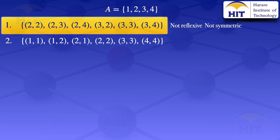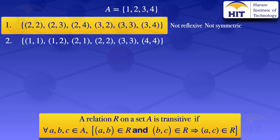I now move on to checking if the relation is transitive. By definition, a relation on a set A is transitive if for all a, b, c in A, if the ordered pair (a,b) is in the relation and (b,c) is in the relation, then (a,c) is in the relation. We look for common elements — the last element of the first pair and the first element of the second pair must be the same — then we check if (a,c) is in the relation.